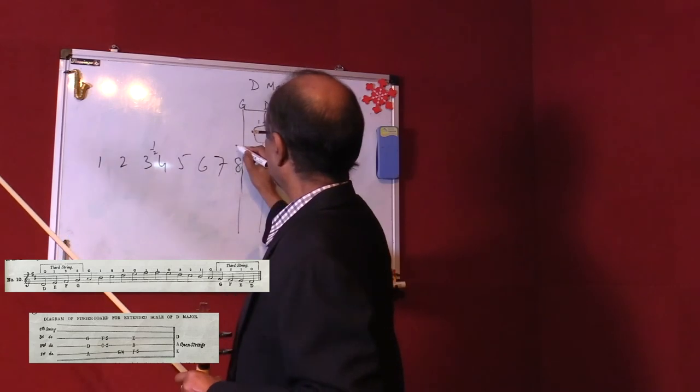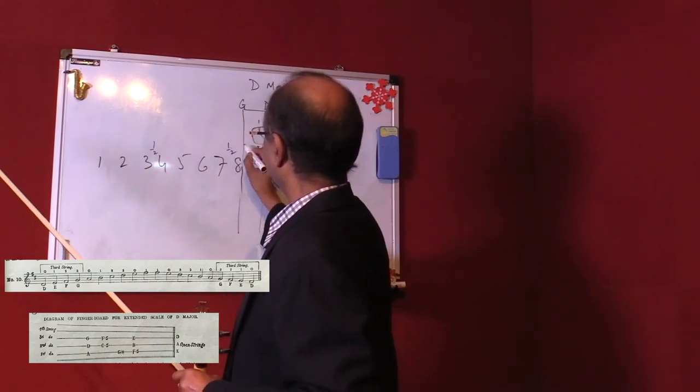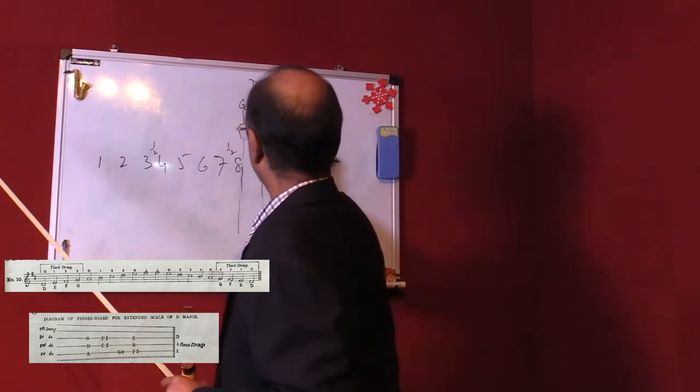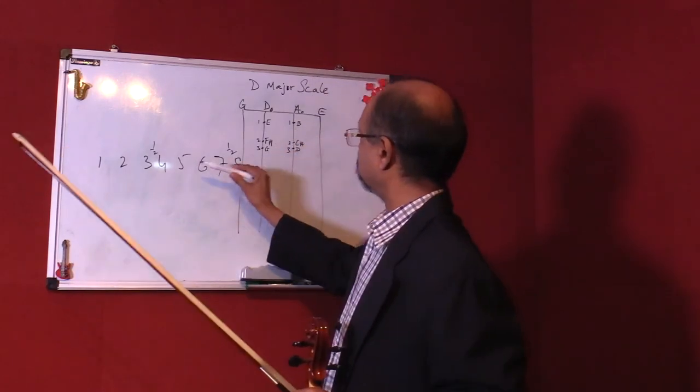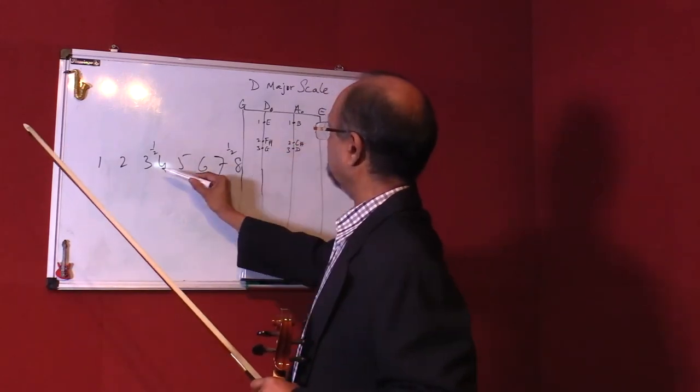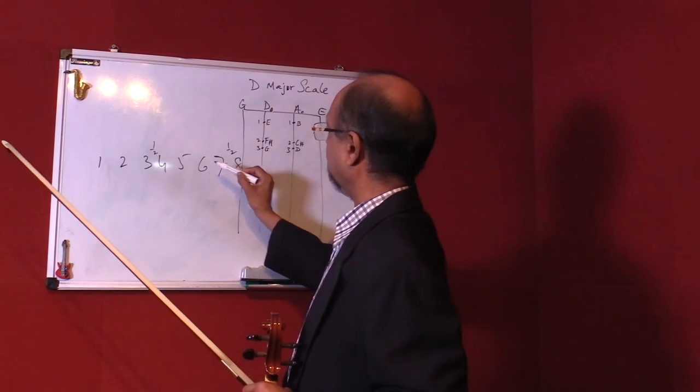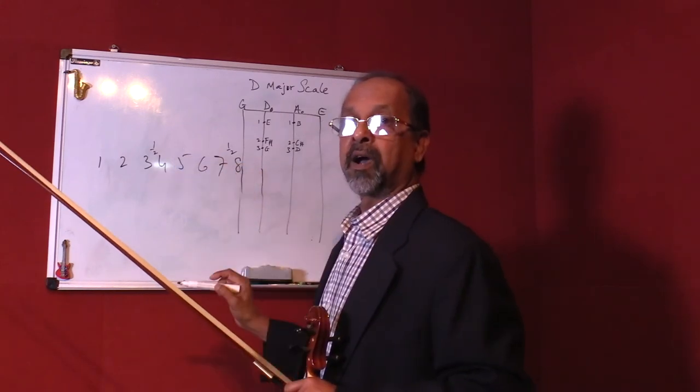And between the seventh and eighth note of the scale, there is half a tone. So basically, the gap is a smaller gap between the fingers, between the third and the fourth and the seventh and the eighth, because of it being half a tone.